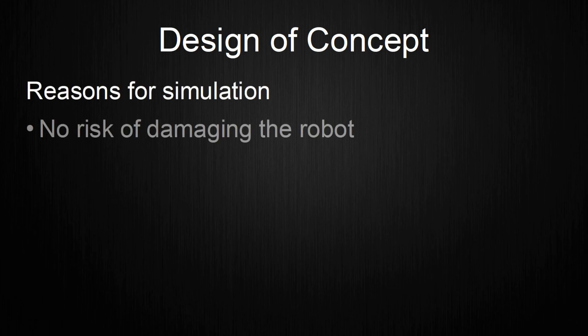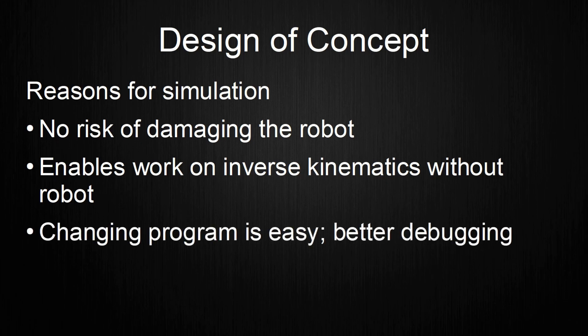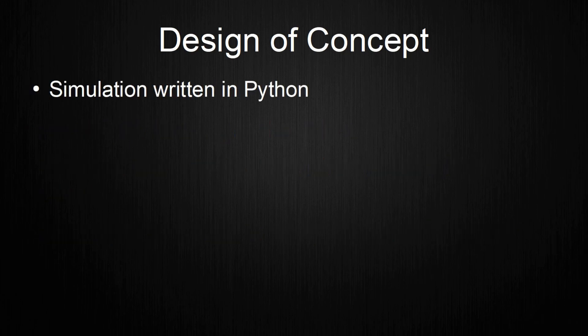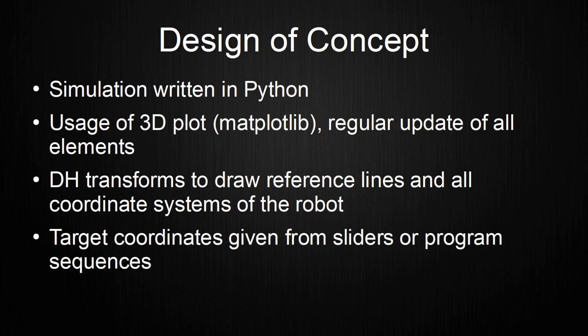To be able to implement and test the inverse kinematic model, I decided to use a simulation. The reasons were that first, I don't risk damaging the robot if I made a mistake that would lead to impossible joint angles. Second, I can work on the inverse kinematics anywhere I want, since I don't need the physical robot. Third, I can more easily swap between inverse kinematic models and I have more detailed debugging tools available. I decided to create the simulation in Python due to its ease of use. To avoid programming a whole GUI, I simply used a 3D plot in matplotlib where I regularly update every element's data. I am aware that this is a bad solution performance-wise, but it does what I want from it. In the simulation, I use the DH transforms to draw reference lines that represent the body. I also use them to draw all coordinate systems in the entire hexapod.